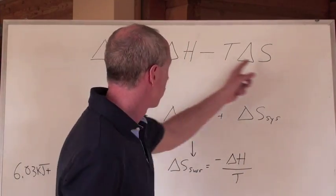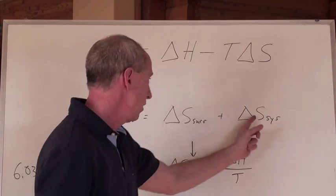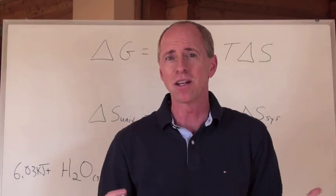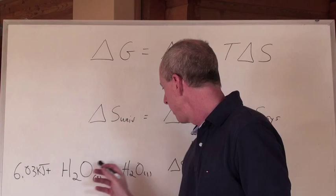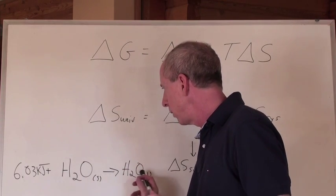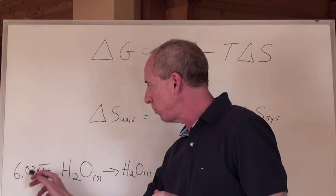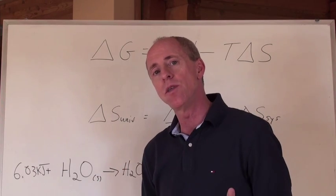Here's an important formula that we're going to derive from this one right here that we're just starting to set up and understand. Let's use that example again of water melting solid to liquid. It requires energy, 6.03 kilojoules of energy to do that.